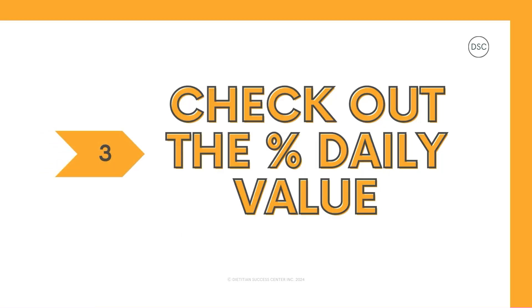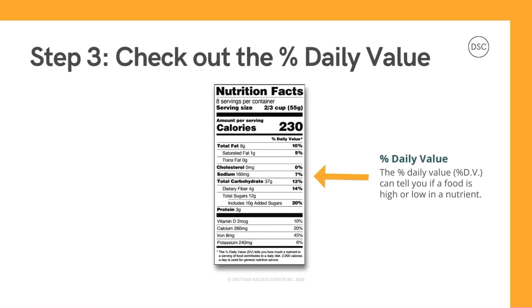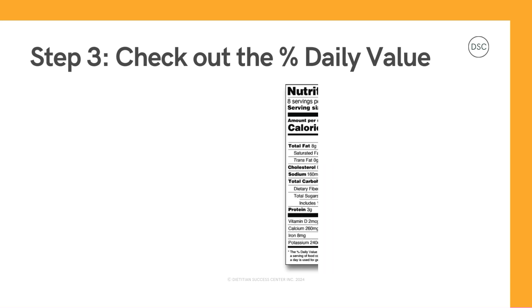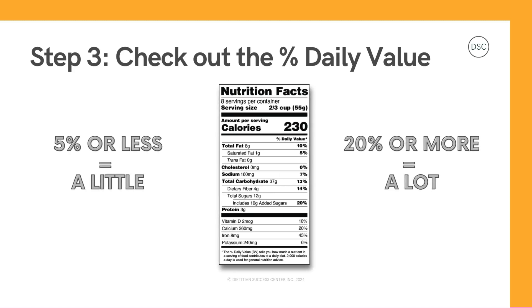This brings us to step number three, which is to check out the percent daily value. You may be wondering what the percentage is that's listed along the right side of the table. This is the percent daily value, or percent DV. This value can tell you if a food is high or low in a specific nutrient. A good rule of thumb is that 5% or less is considered a little, and 20% or more is considered a lot.